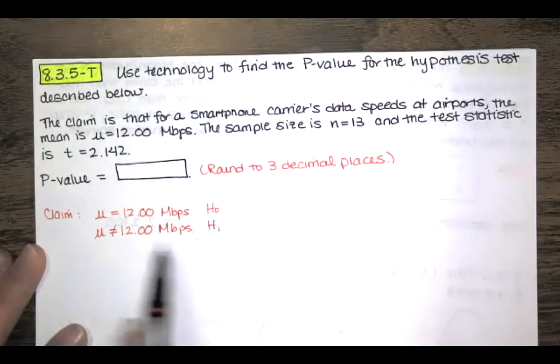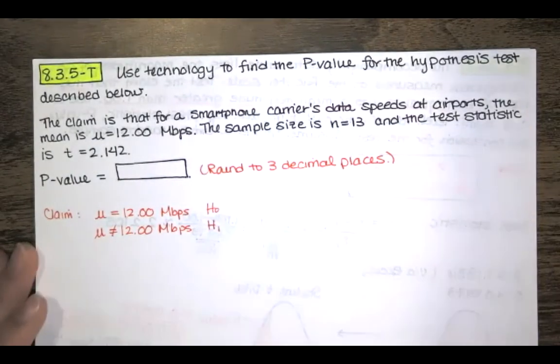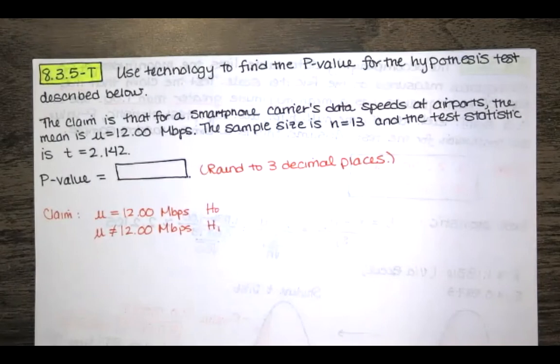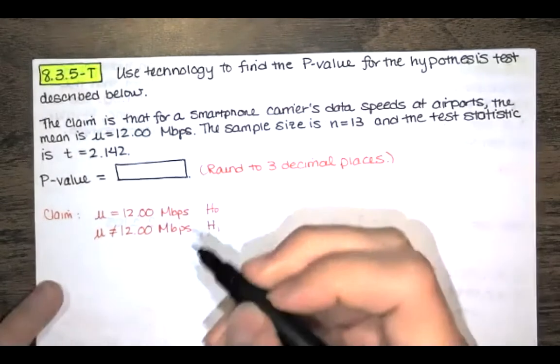From this we can see that we have a two-tailed test and that's important because the p-value is the area in the tails beyond that test statistic and we might have to double that area if it's a two-tailed test. So if we're in the case where we have a two-tailed test we're going to double that area.